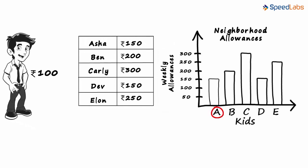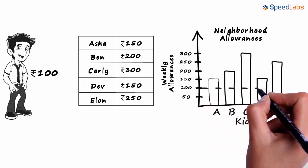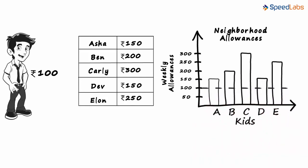Asha gets around 150 rupees. Ben gets around 200 rupees, and so on. Zen tells his dad that this is what he gets, and everybody else gets a weekly allowance more than him.